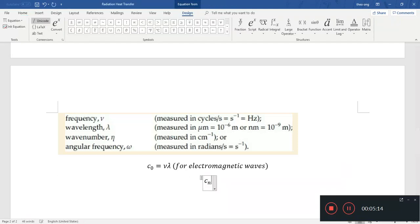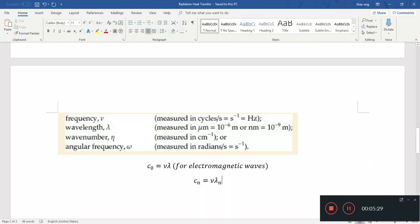If there's a refractive index, then you have c_n νλ. ν (nu) is the same—frequency just depends on the source, it depends on the energy of the photon. But what happens is that the wavelength will start to change. Usually it is the wavelength that will change.